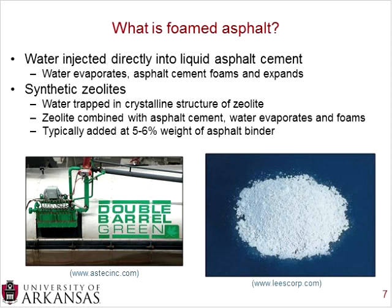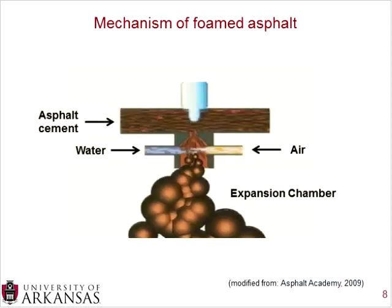When using the zeolite, you typically add five to six percent by weight of the asphalt binder. The schematic shows an asphalt cement line connected to a small amount of water and air, which causes expansion. With a zeolite, instead of a water and air entrance, the zeolite is added at that point and the same effect occurs — the water immediately evaporates and foaming begins.